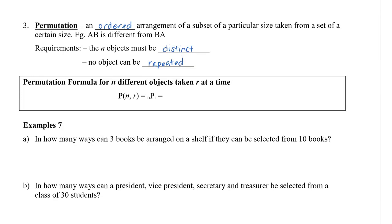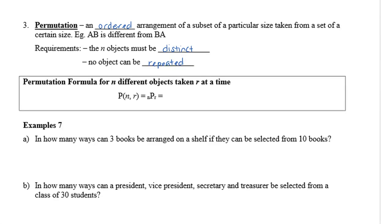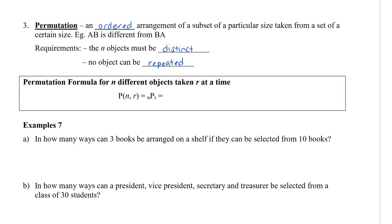Before I give you the formula, let's take a look at something we already know. In this example, we have three books that need to be arranged on a shelf, and we can select them from 10 books. We're going to assume that all of these books are different.